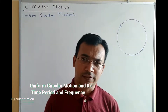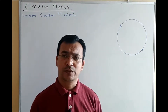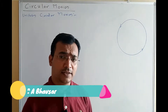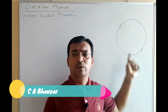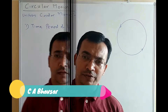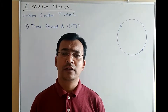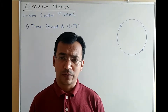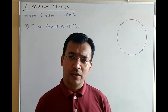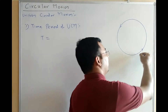UCM has two parameters. The first is the time period of uniform circular motion. The time period of uniform circular motion is defined as the time taken by a particle performing uniform circular motion to complete one revolution along the circumference of the circle.